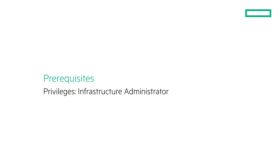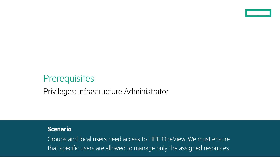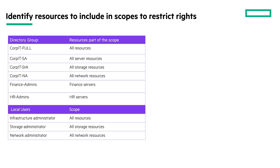You must have infrastructure administrator privileges to perform all the steps. The scenario we are considering in this video is of a company X. X is launching a cloud-based pilot project for bare metal servers. HPE OneView appliance is configured to host the servers. Groups and local users need access to HPE OneView. We must ensure that specific users are allowed to manage only the assigned resources. Let us start by identifying the resource categories that must be part of the scope.